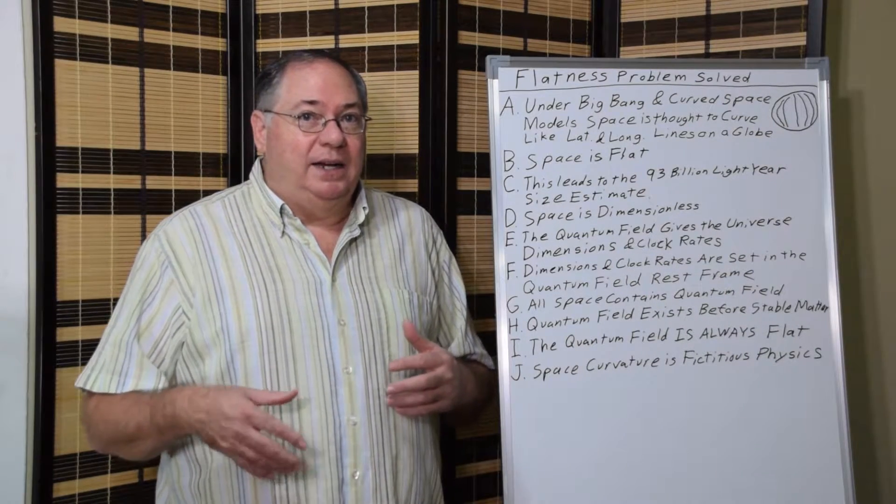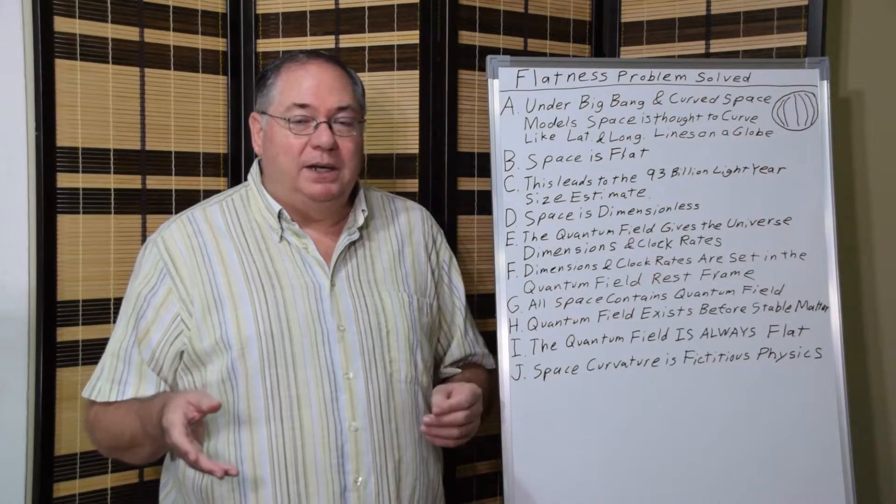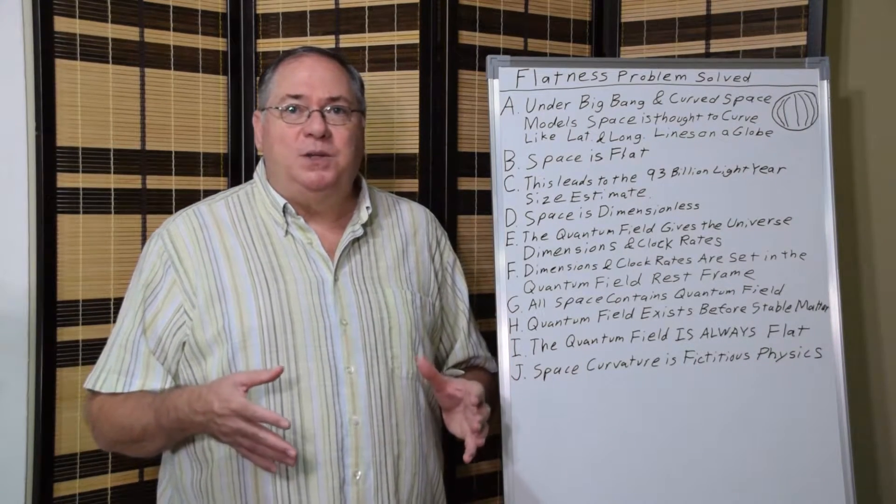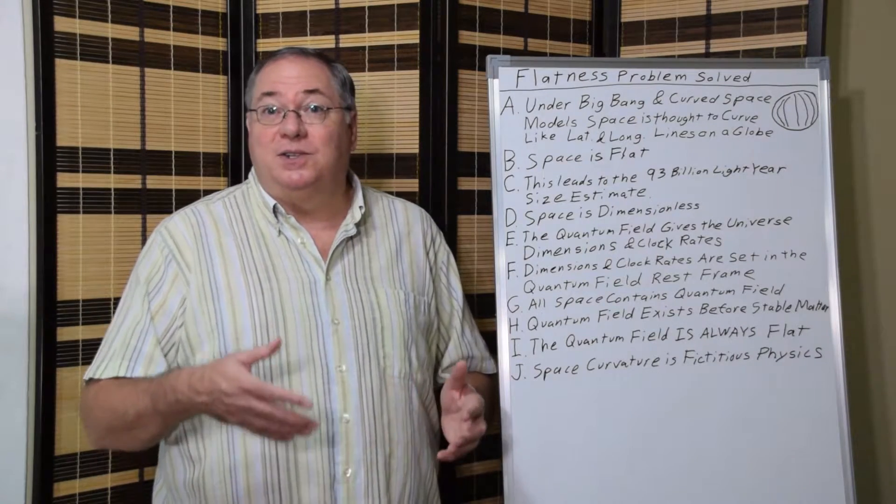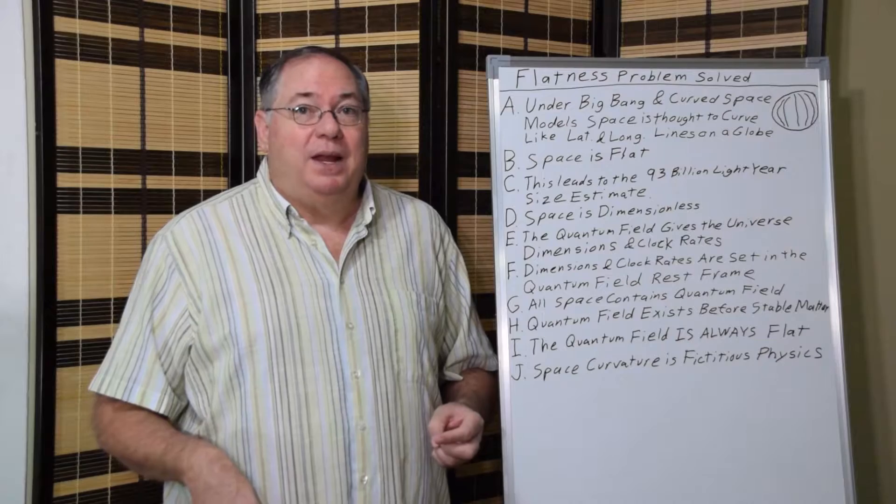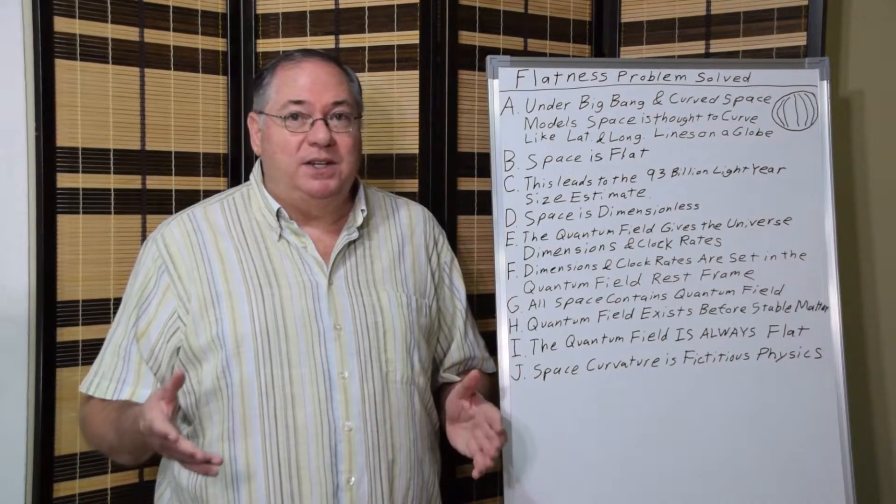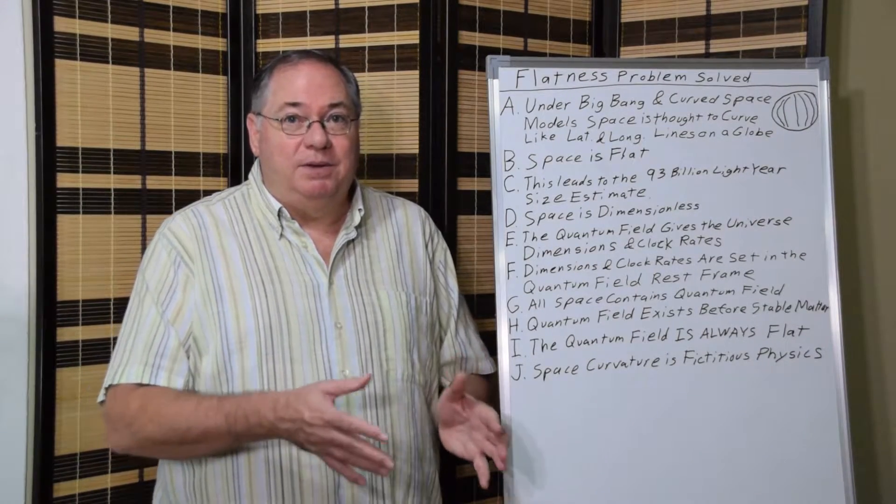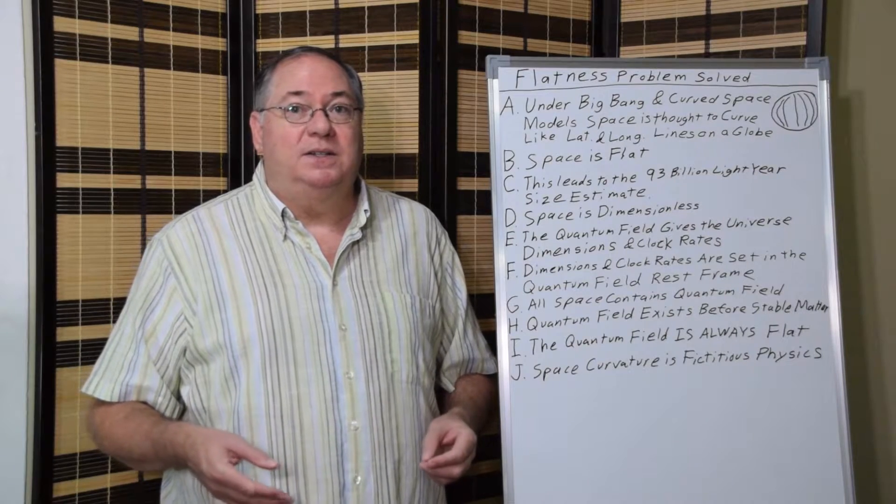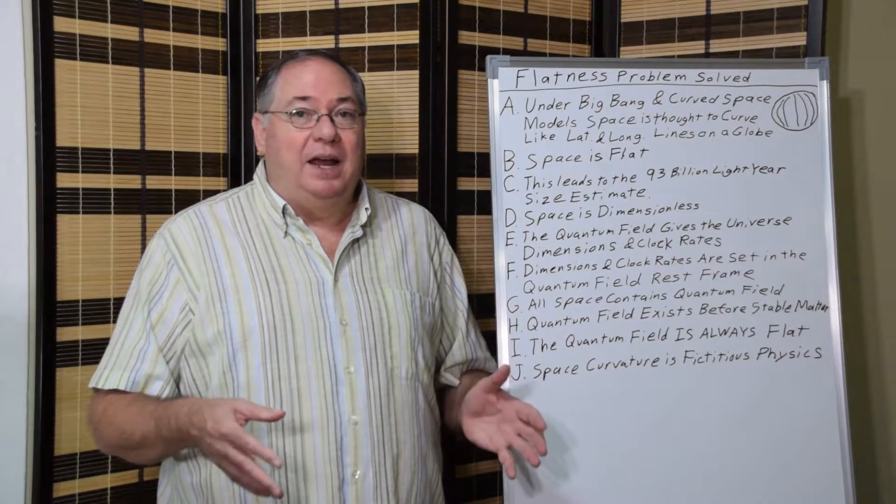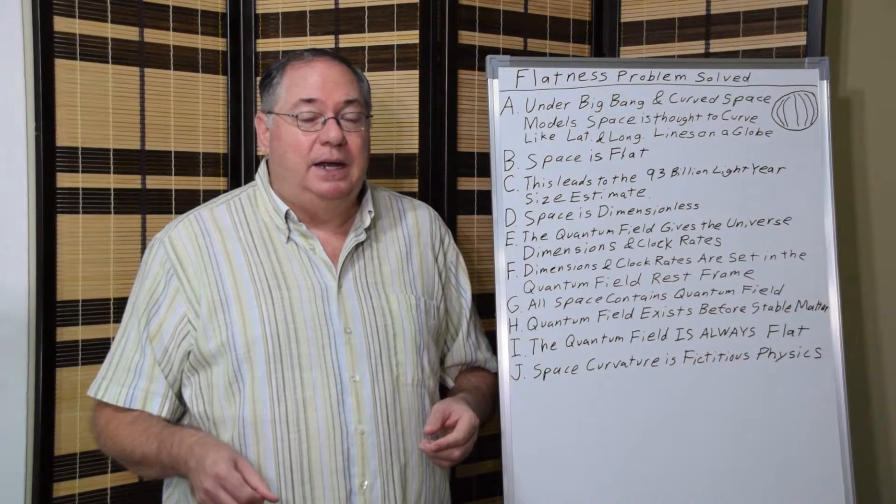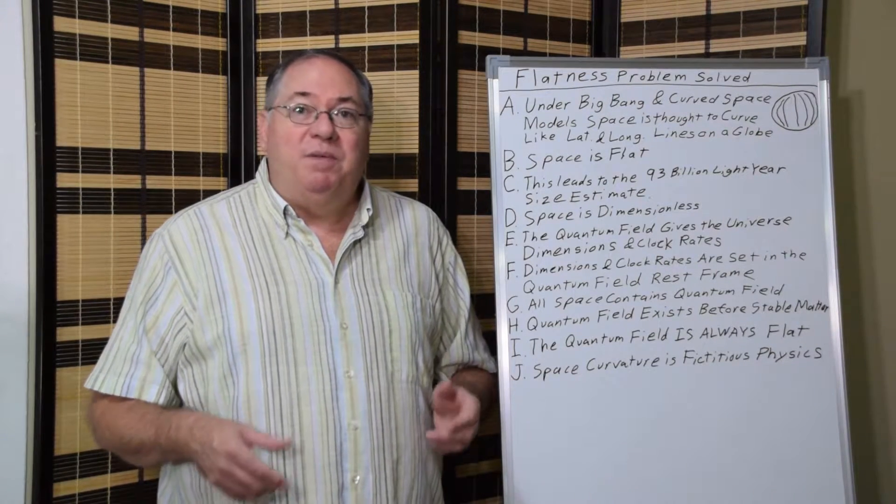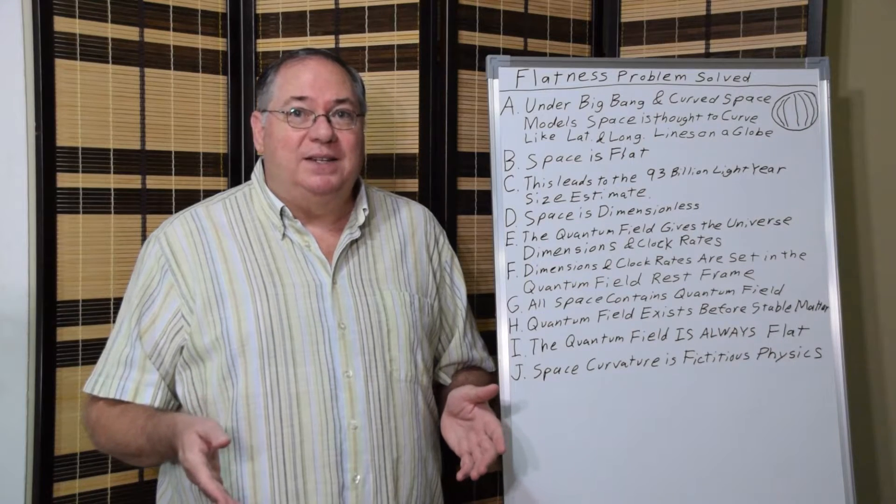Einstein, in his Gedanken experiment, his thought experiment, said, what if space were physical and had physical dimensions? And what if it had physical clocks, too? And then what if those physical dimensions and clocks changed around large bodies of matter like stars? Then we could have his theory of general relativity.